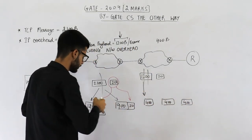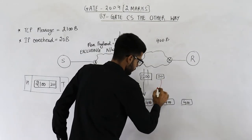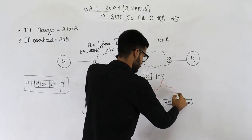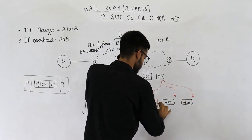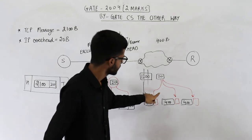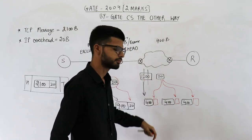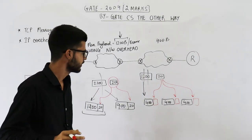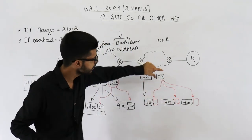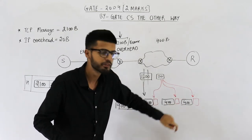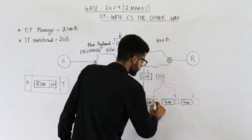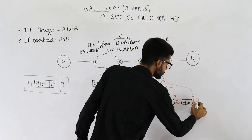The header will be copied onto all three fragments, since important information like source IP and destination IP must be present on all packets. Only the offset and more fragments fields will change. So each of the three fragments gets a 20-byte header — that is 20, 20, and 20 bytes.